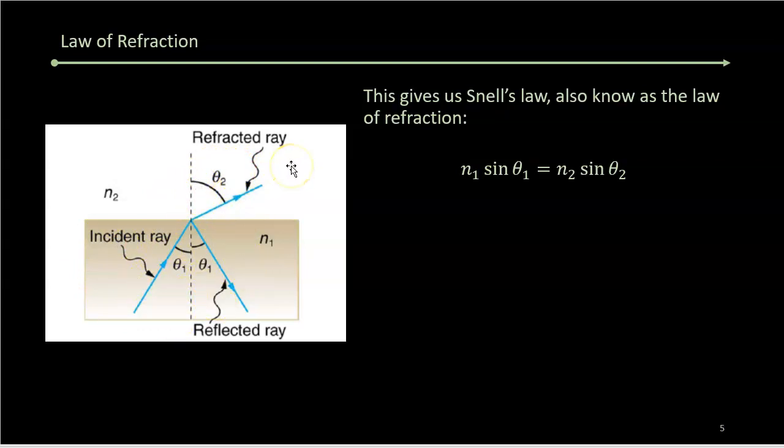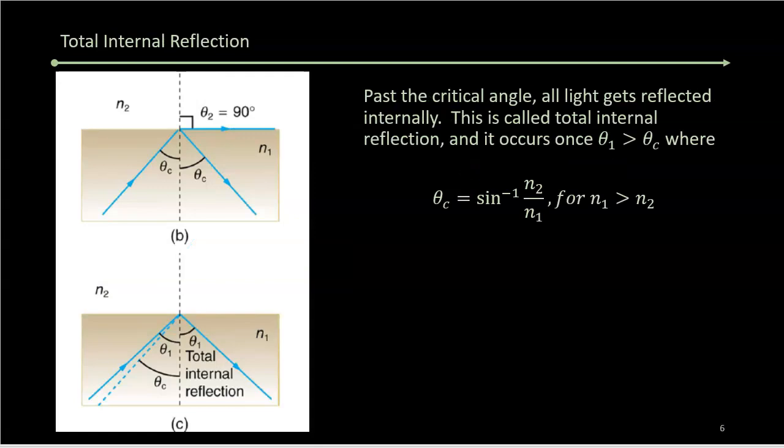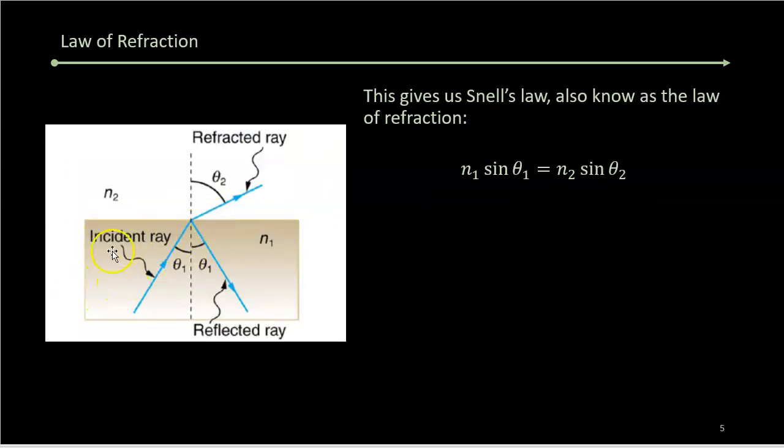The other thing that happens when you look at this: when you go from a material that is more optically dense—i.e., n₁ is higher than n₂—to one that's less optically dense, the light bends away from the normal.